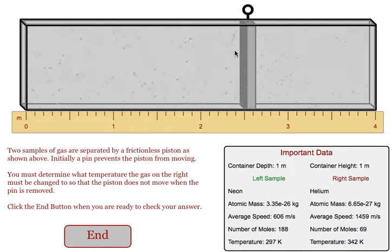It is important to realize that pistons move because of a difference in pressure, so if we equalize the pressure on the two sides of the piston, it will not move. All the information you need about your chambers are given to you down here in important data and on the ruler.